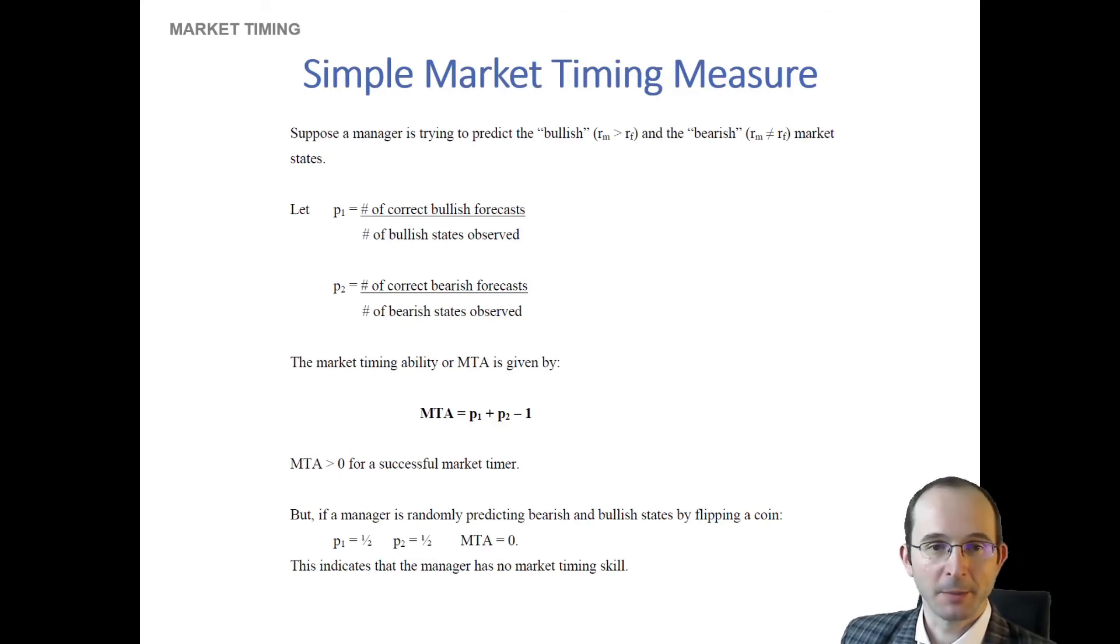But a simpler market timing measure would just be to look at an accuracy rate. Since managers do go public with their predictions, we can actually say, well, how many times did you make a bullish market forecast where you suggested that it would be good to increase exposure relative to how many times that actually turned out to be the case? And how many times did you make a correct bearish forecast? In other words, a call to reduce market exposure relative to how many times that turned out to be the case.